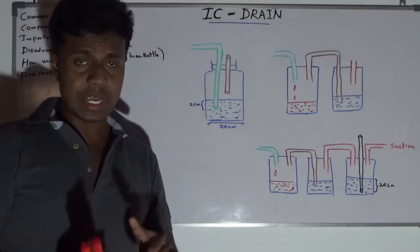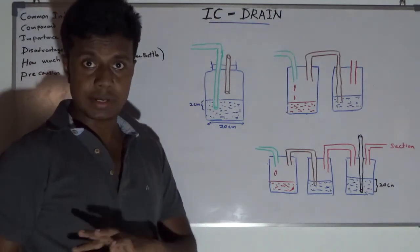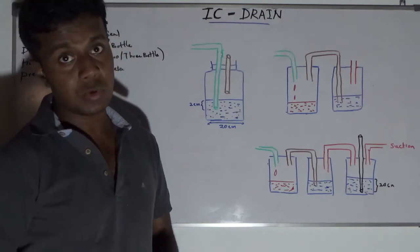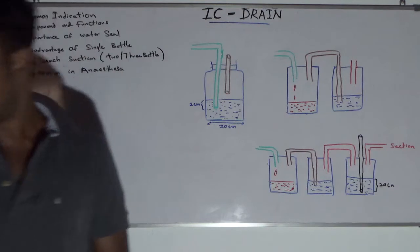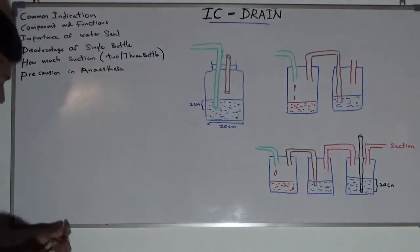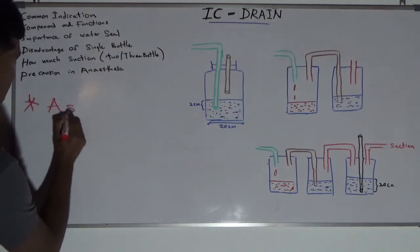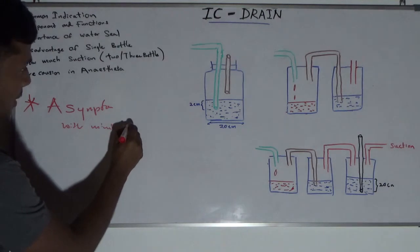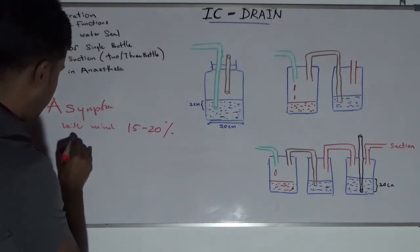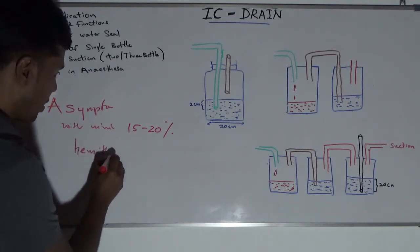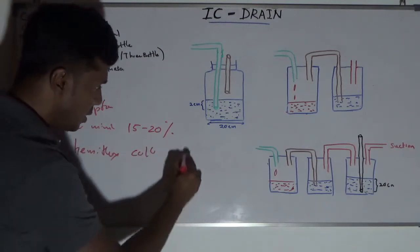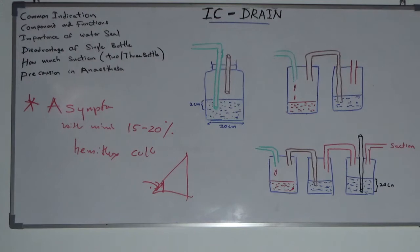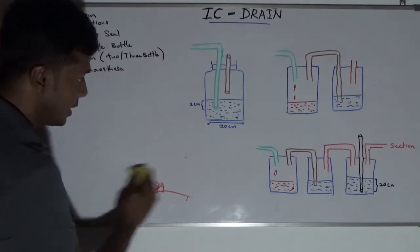Before moving into indications, if your patient is having pneumothorax and hemothorax, or hemothorax without symptoms, you can manage conservatively if it is less than 15 to 20% of hemothorax. Asymptomatic patient with minimal — that means 15 to 20% — of hemothorax collection, if it is 15% of one lung collection, can manage conservatively. Other patients will, most of the time, need IC drain.